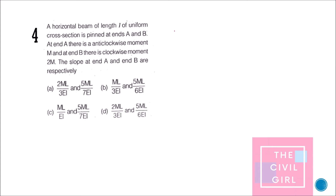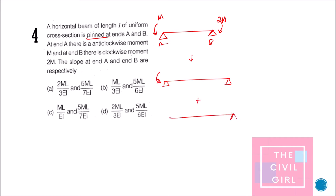Next question: a horizontal beam of length L with uniform cross section is pinned at ends A and B. At A there is an anti-clockwise moment M, and at B there is a clockwise moment 2M. What are the slopes at A and B respectively? This problem can be divided into two cases: moment applied at end A, and moment applied at end B.